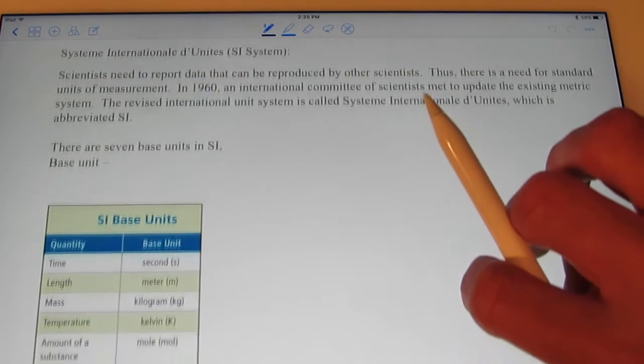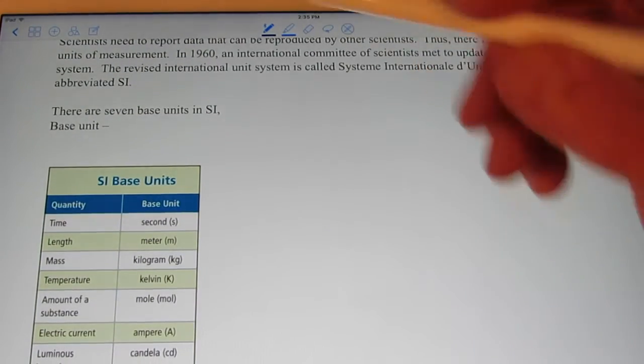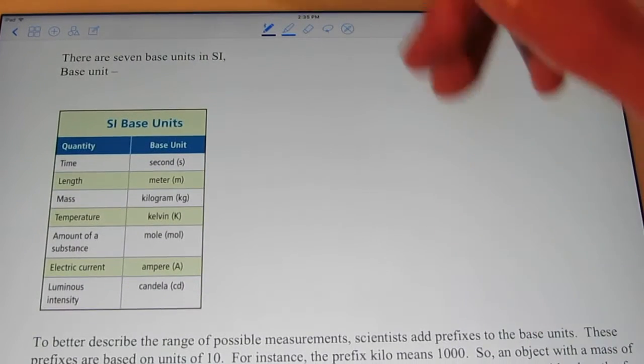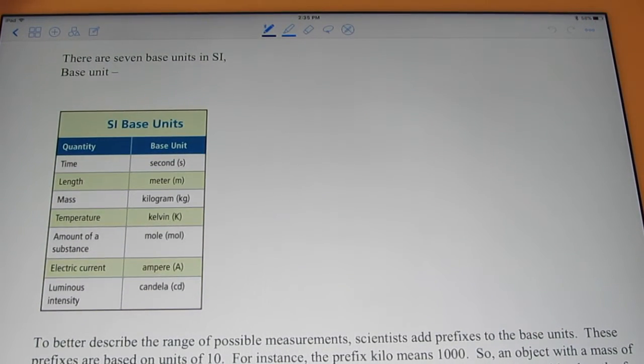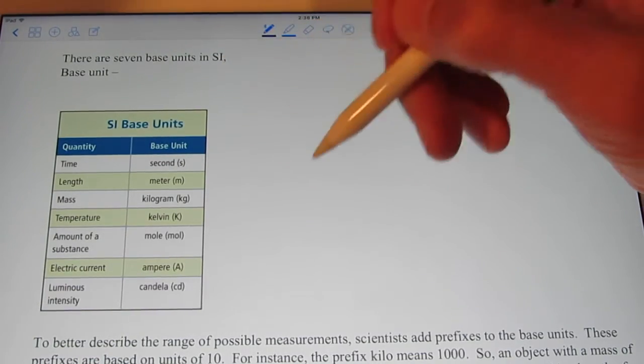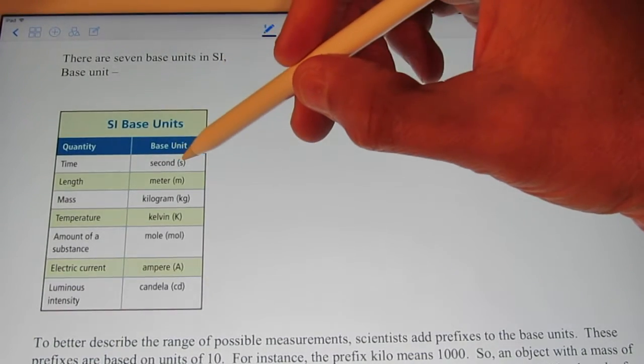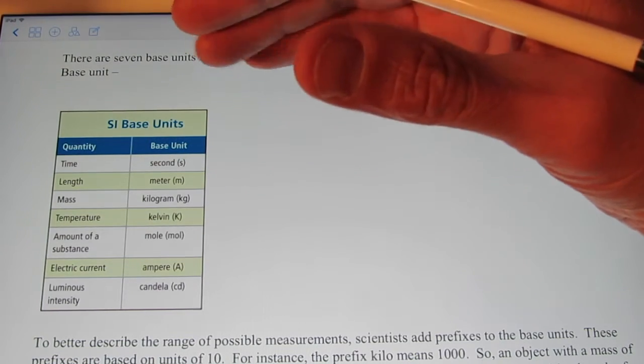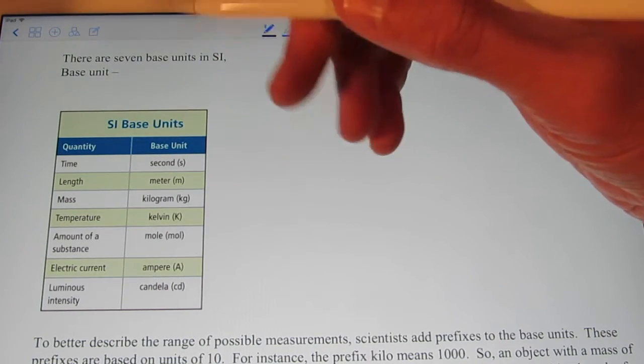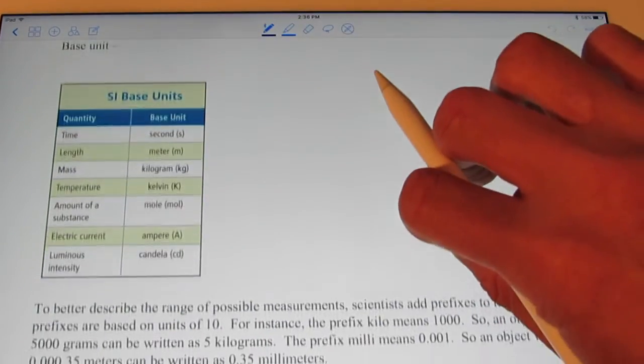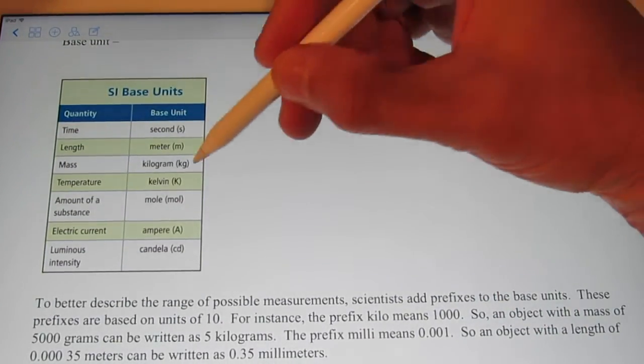There are seven base units to measure certain quantities. To measure time, the unit is the second, not the hour, week, or month. The unit to measure length is the meter, not a foot, yard, or mile. The unit to measure mass is the kilogram, not a pound.